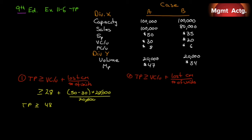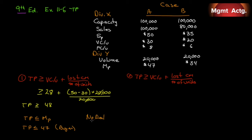From the buyer's perspective, the transfer price must be less than or equal to the market price division Y is already paying: $47. You cannot have a price that is both greater than $48 and less than $47 simultaneously. There is no deal — it's in no one's best interest, and therefore not in the company's best interest either.